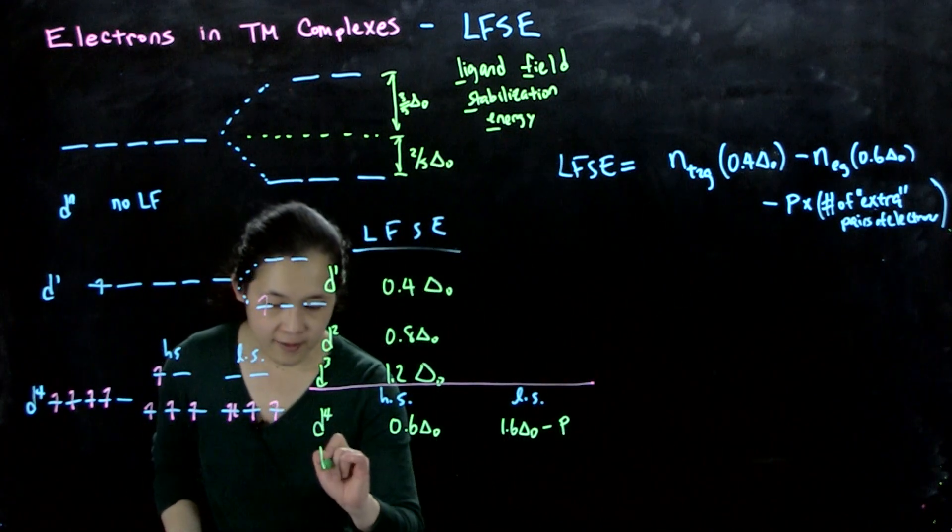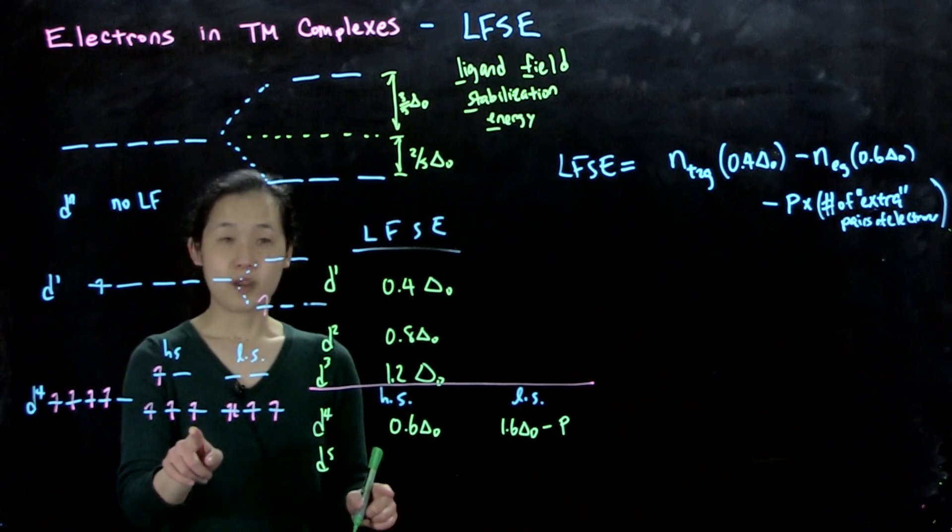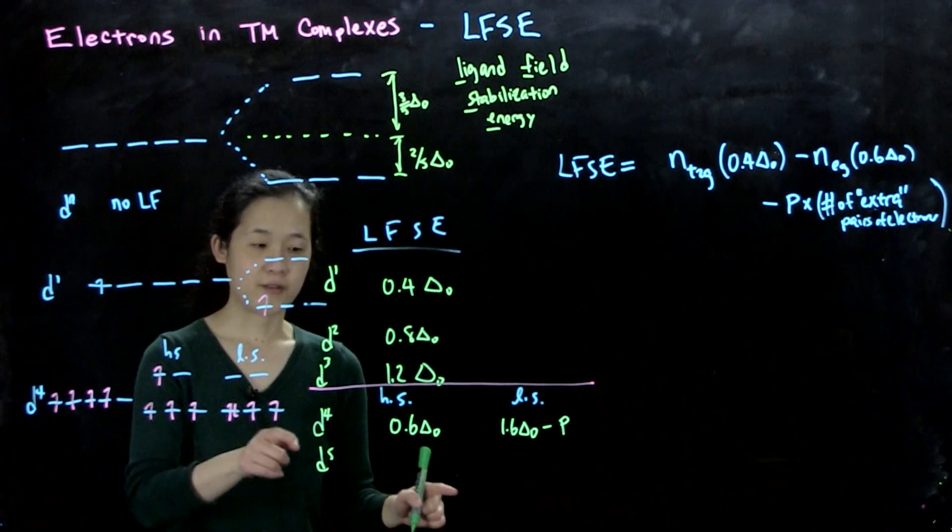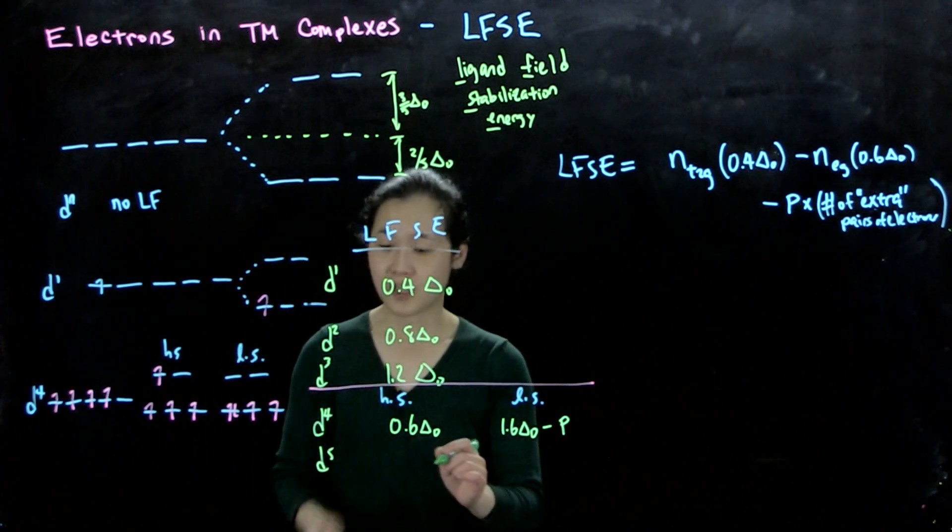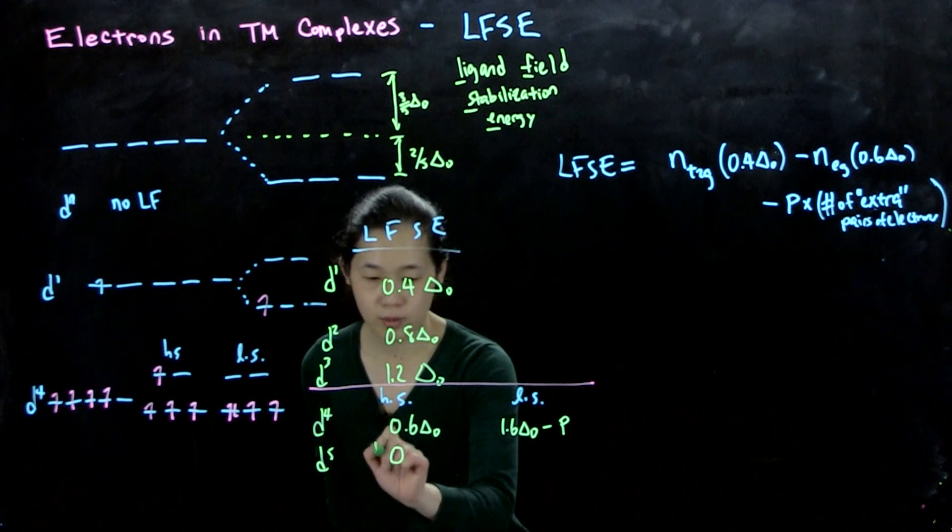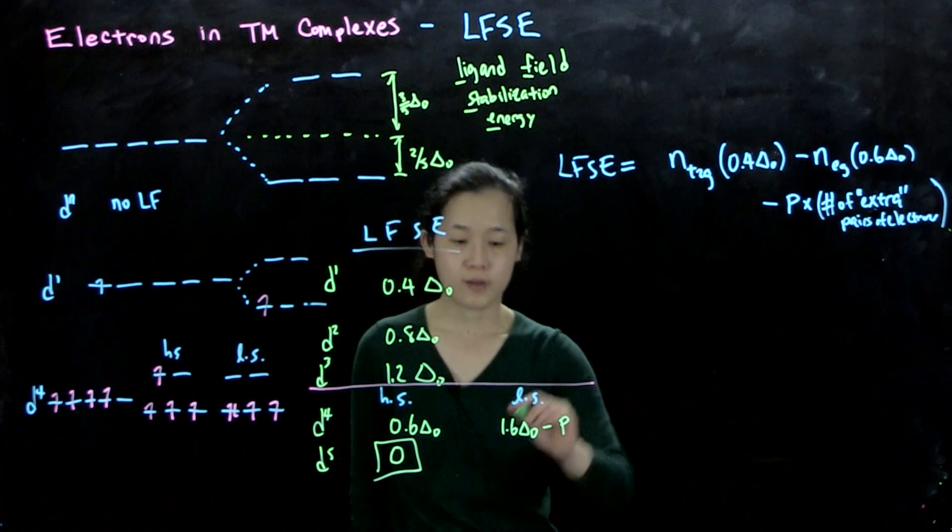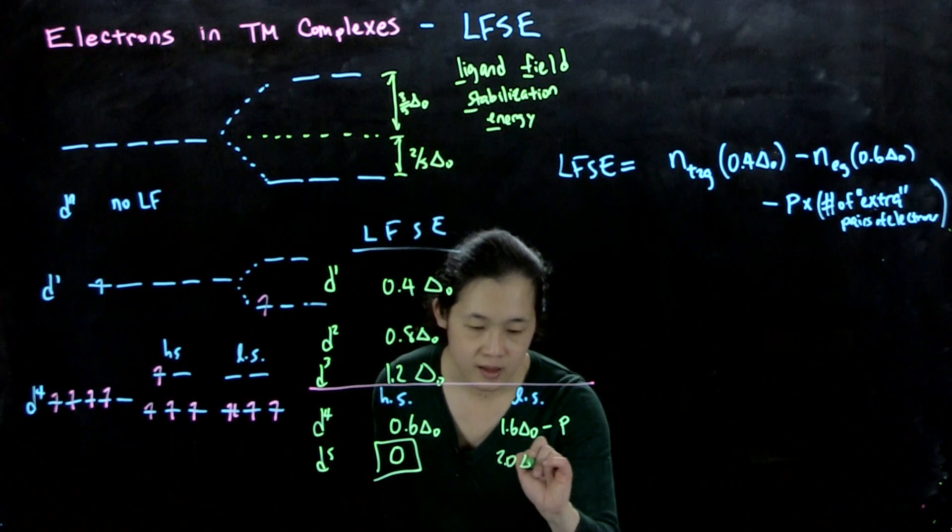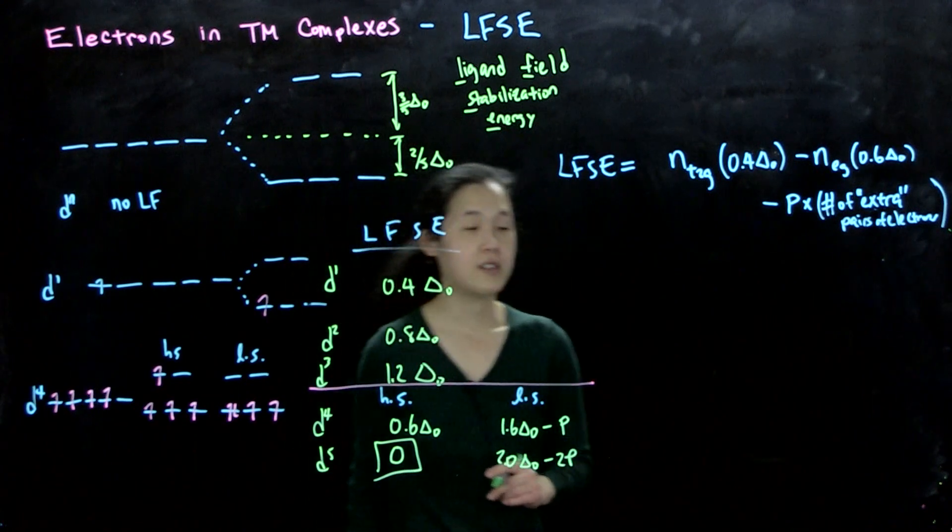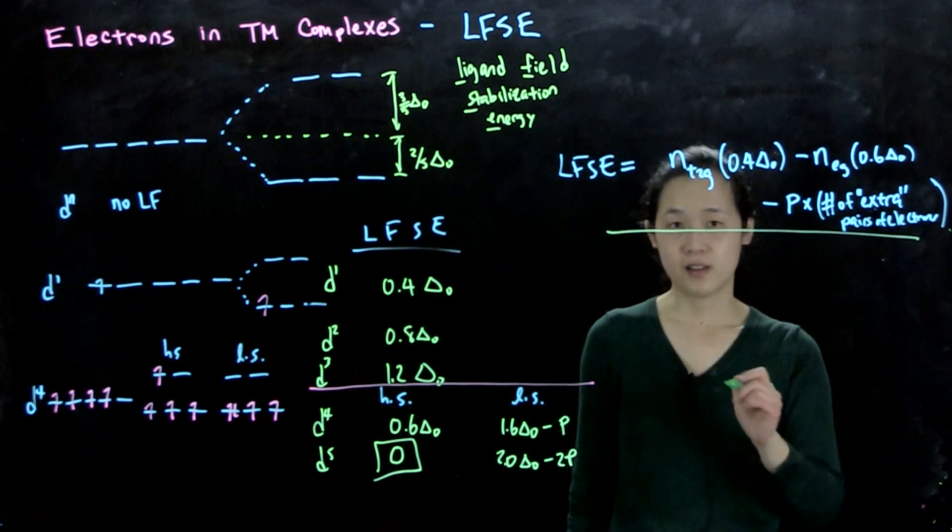And the same thing will happen with D5. We'll have 3 in the bottom one, so 3 times 0.4 is 1.2. Then we're subtracting 0.6 for D5. So for the high spin configuration, D5 actually has 0 LFSE. This is 0. Well, the low spin configuration will have 5 times 0.4, so it's 2.0 delta O minus 2P. So here's what I mean by extra pairing.